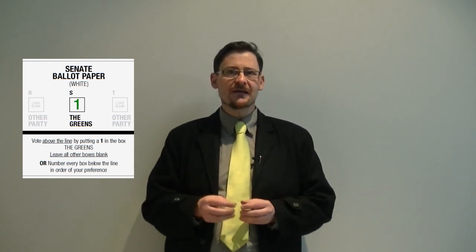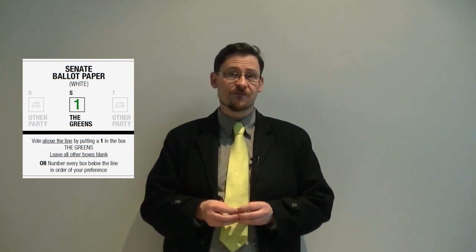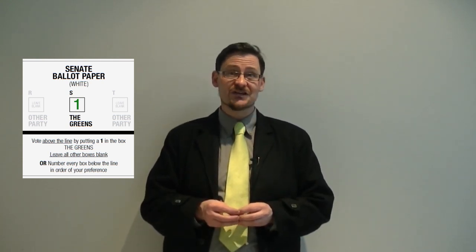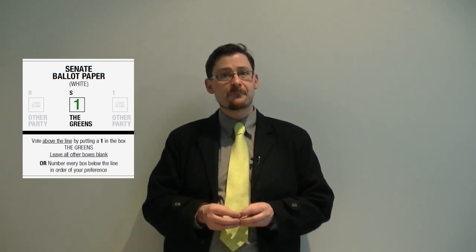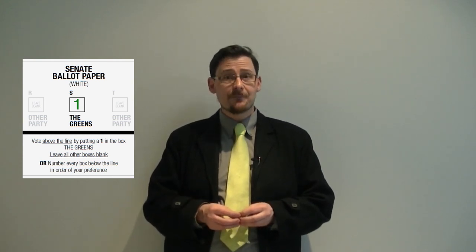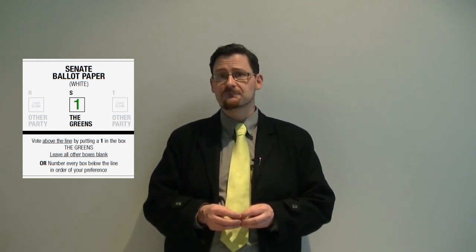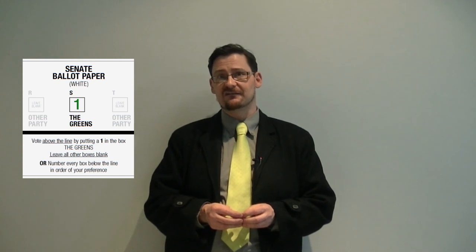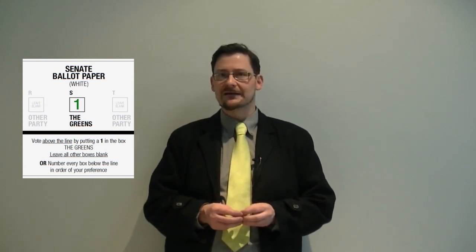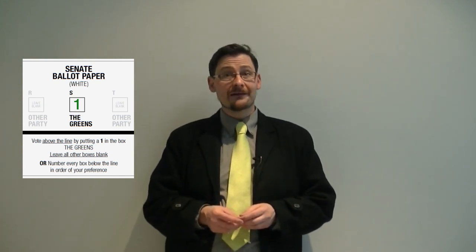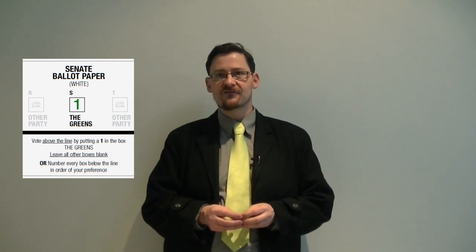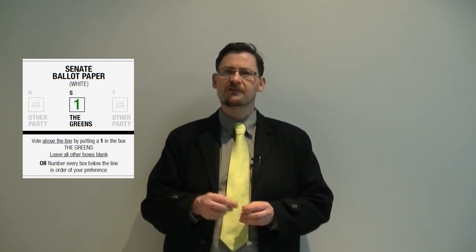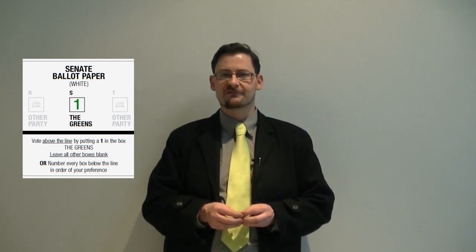In the unlikely event of the voters not electing Janet Rice to the Senate, your vote for the Greens will then pass through a number of like-minded progressive parties before getting to the Labor Party. But if you want, you can choose to number all 97 boxes below the line to express your choice.